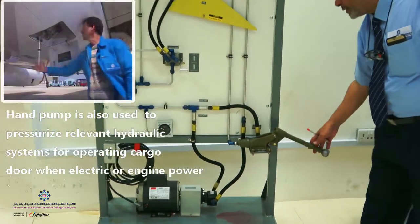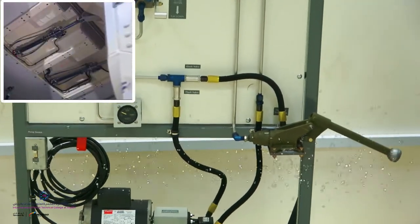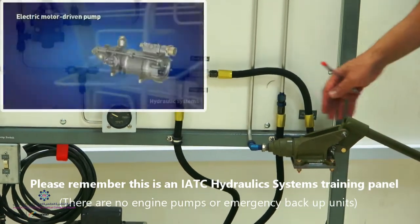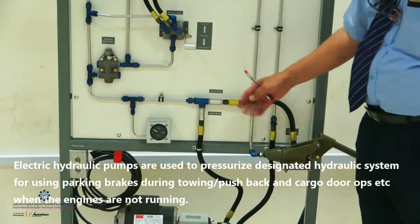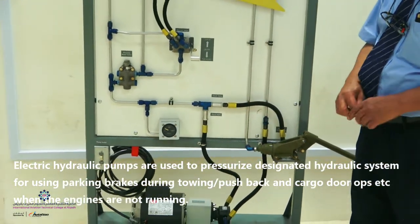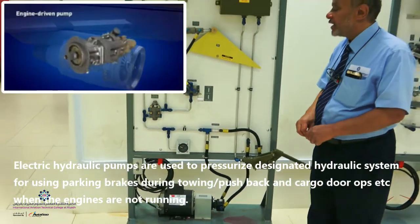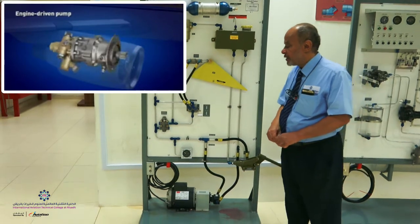The pumps here are shown: the manual pump, which is used for maintenance purposes usually, and also we have an electric pump shown here which will pressurize the system. And also there is a third pump known as EDP, engine-driven pump, attached to the gearbox of the engine.